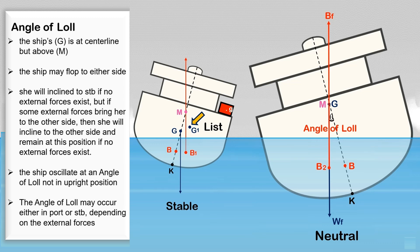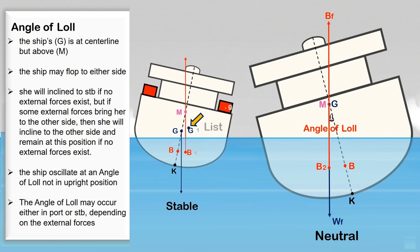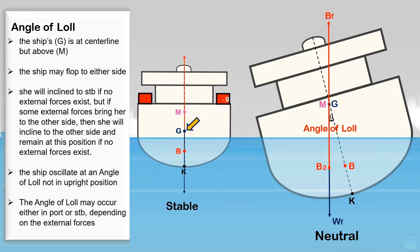List is easier to correct compared to the angle of loll. To correct a list, we can add weight to the other side until the ship's center of gravity is along the centerline. Be sure to calculate the ship's KG when doing this, since adding weight above the ship's center of gravity will cause the ship's G to rise.